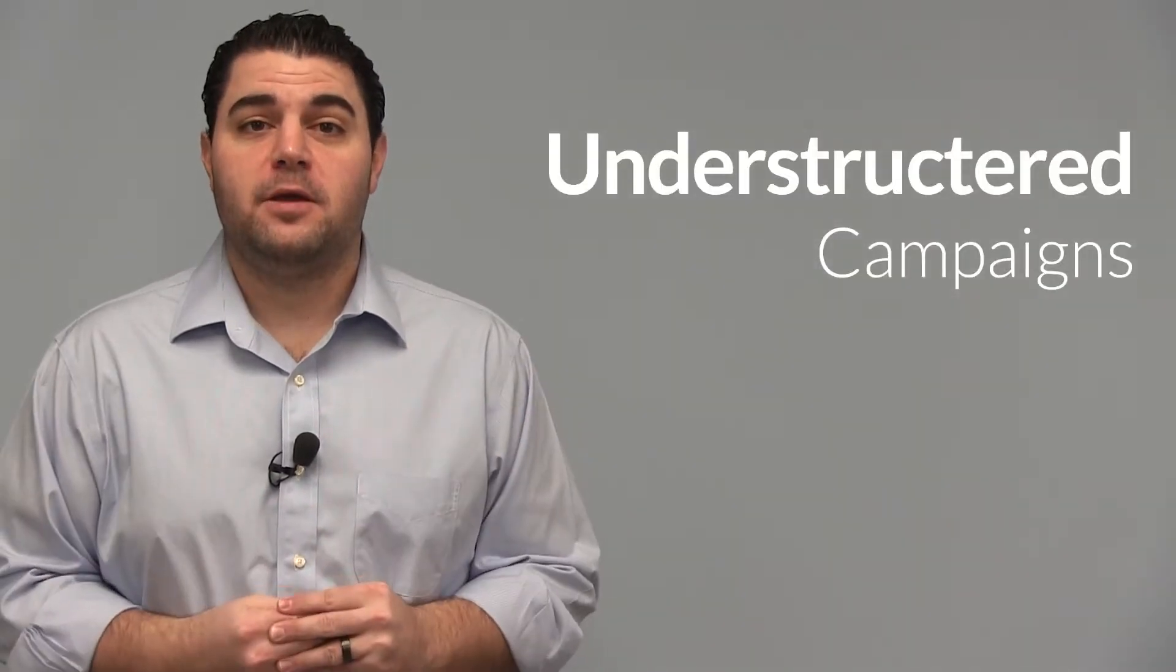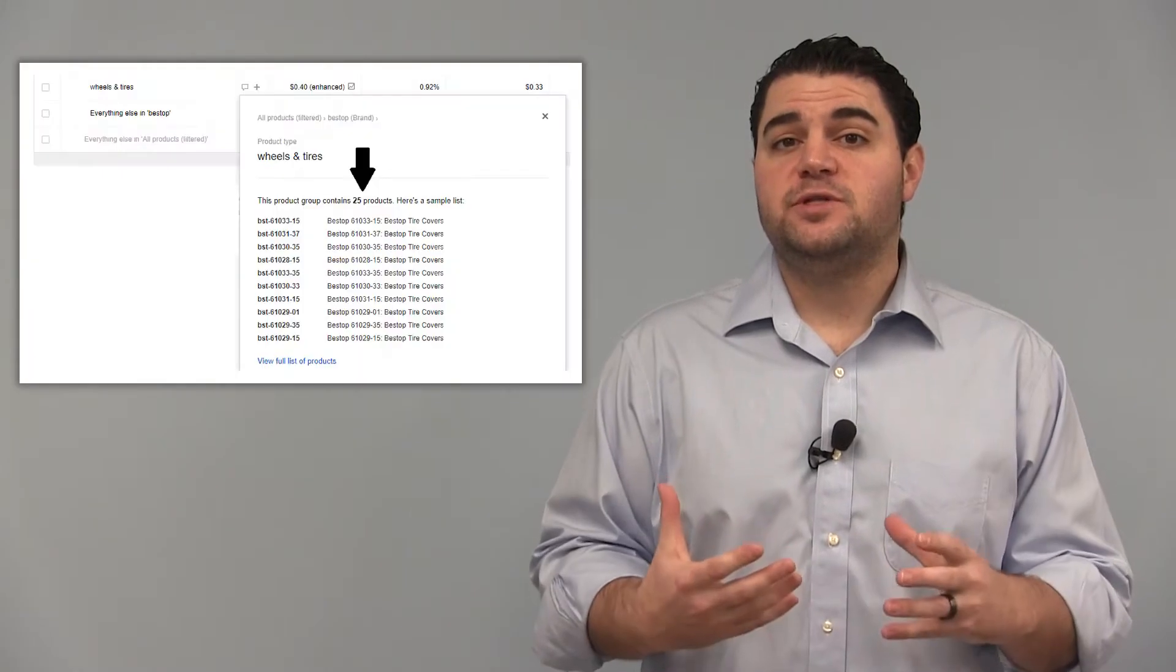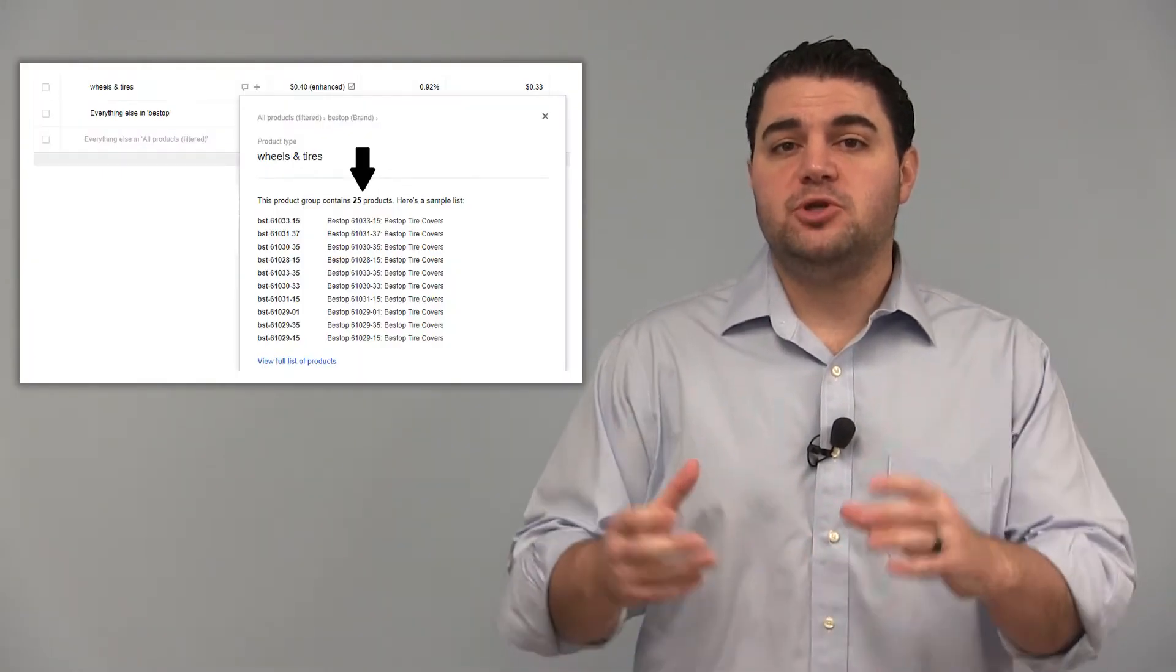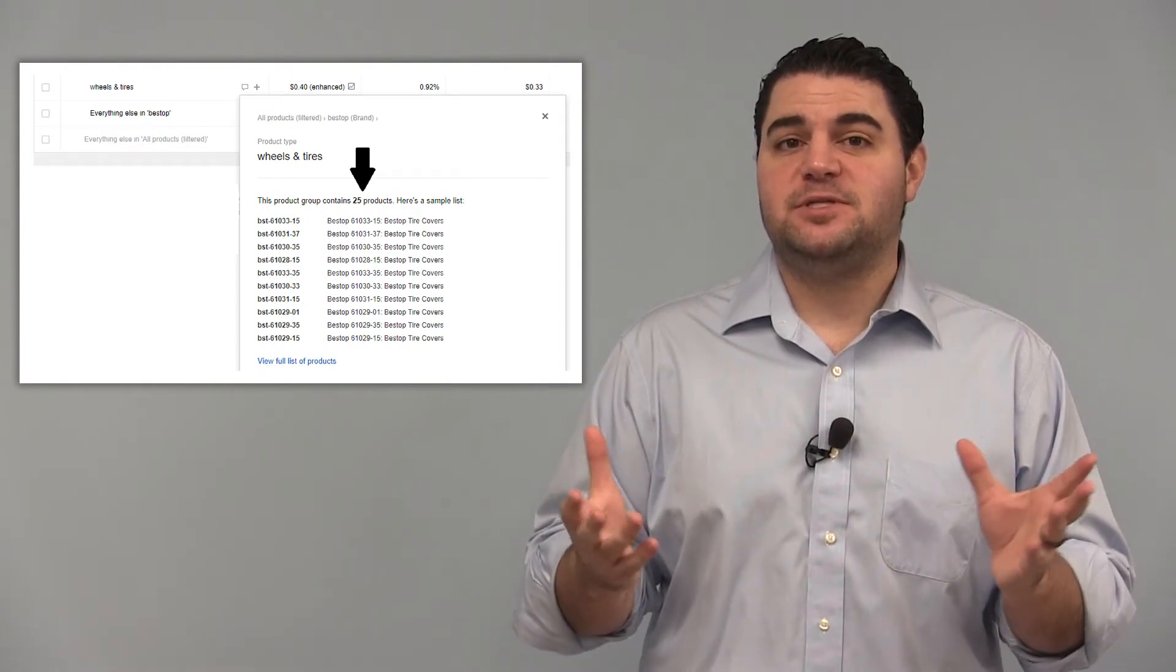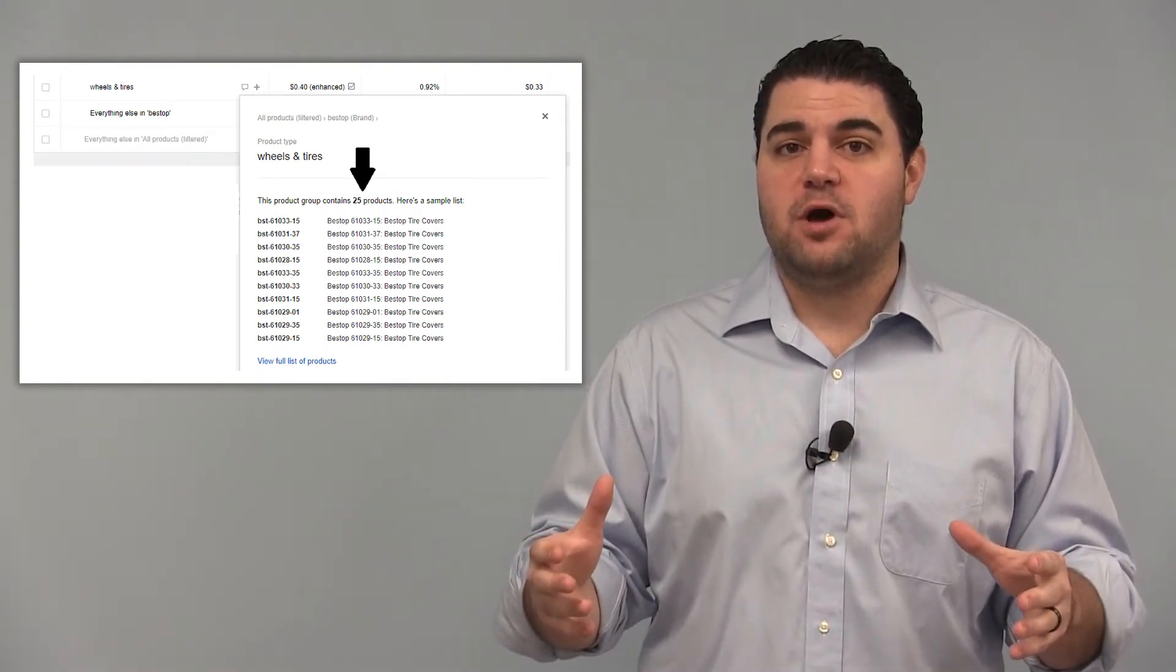So to start, I'm gonna be talking about an understructured campaign, or essentially a campaign that you haven't subdivided enough. So as you can see here, this retailer took 25 products and put them into this one little subgroup and set a 40 cent max CPC bid for every single one of those products.